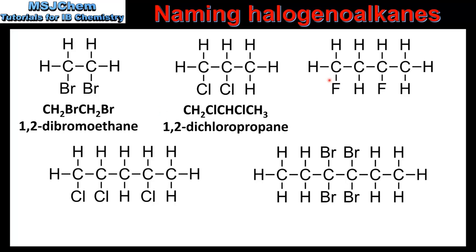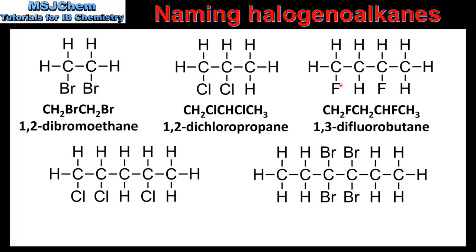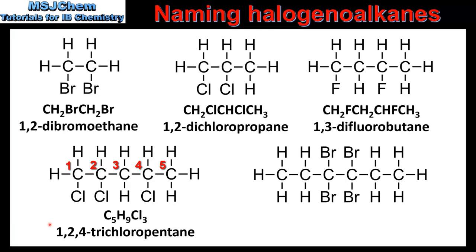Our next example has 4 carbon atoms in the longest chain with 2 carbon atoms bonded to fluorine atoms. One fluorine atom is bonded to carbon number 1 and the other to carbon number 3, therefore this compound is named 1,3-difluorobutane. The next example has 5 carbon atoms in the longest chain with three carbon atoms bonded to chlorine atoms at carbon number 1, carbon number 2, and carbon number 4.